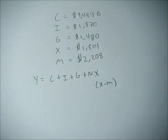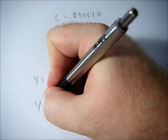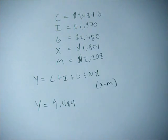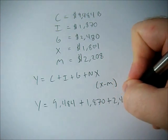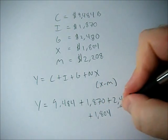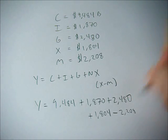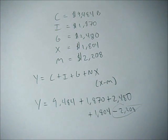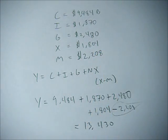So we plug these values in. When we plug these values into our Y equation, we get Y equals 9,484 plus 1,870 plus 2,480 plus 1,804, our exports, minus, and this is the key trick here, imports. So don't just add them all together. Add them all together except for imports, which has a minus sign. So when you add all those together, you'll get a total of $13,430 billion.